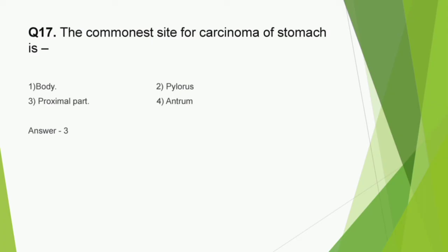Question number 17: The commonest site for carcinoma of the stomach is body, pylorus, proximal part, or antrum. The correct answer is option 3, proximal part. The commonest site for carcinoma of breast is a previous year question, so the commonest site for carcinoma in other parts like lower GIT, colon, small intestine, etc. may also be noted.